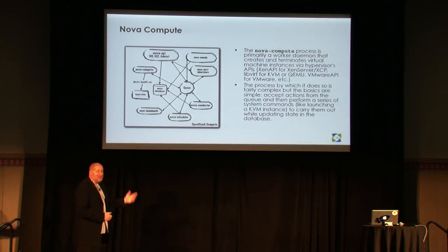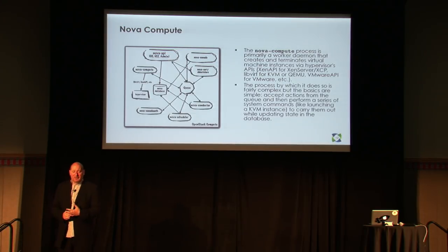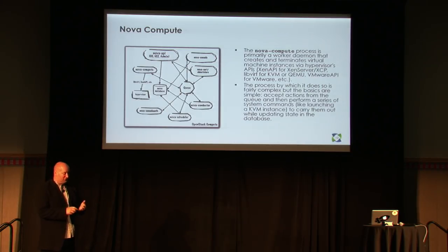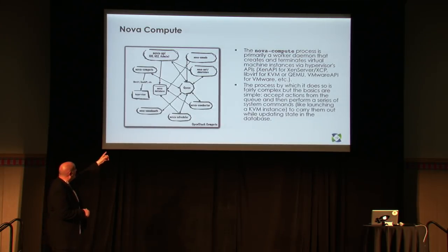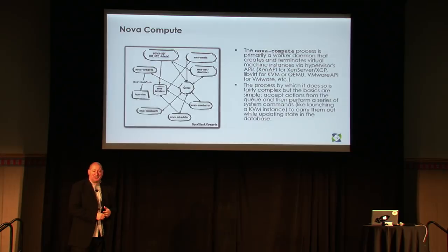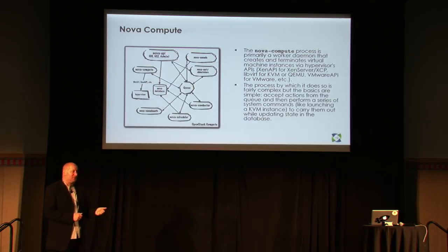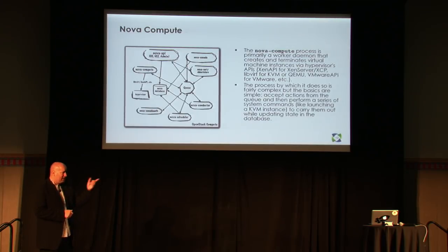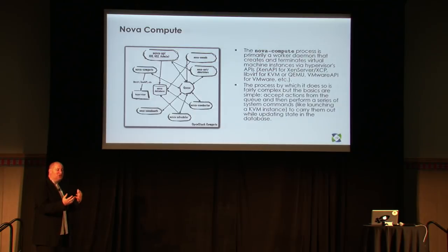Likewise, the queue can be implemented with different technologies. Most people tend to use RabbitMQ. However, Red Hat uses Qpid, Cloud Scaling uses ZeroMQ which they've written, and you can basically use different queuing technologies for that.